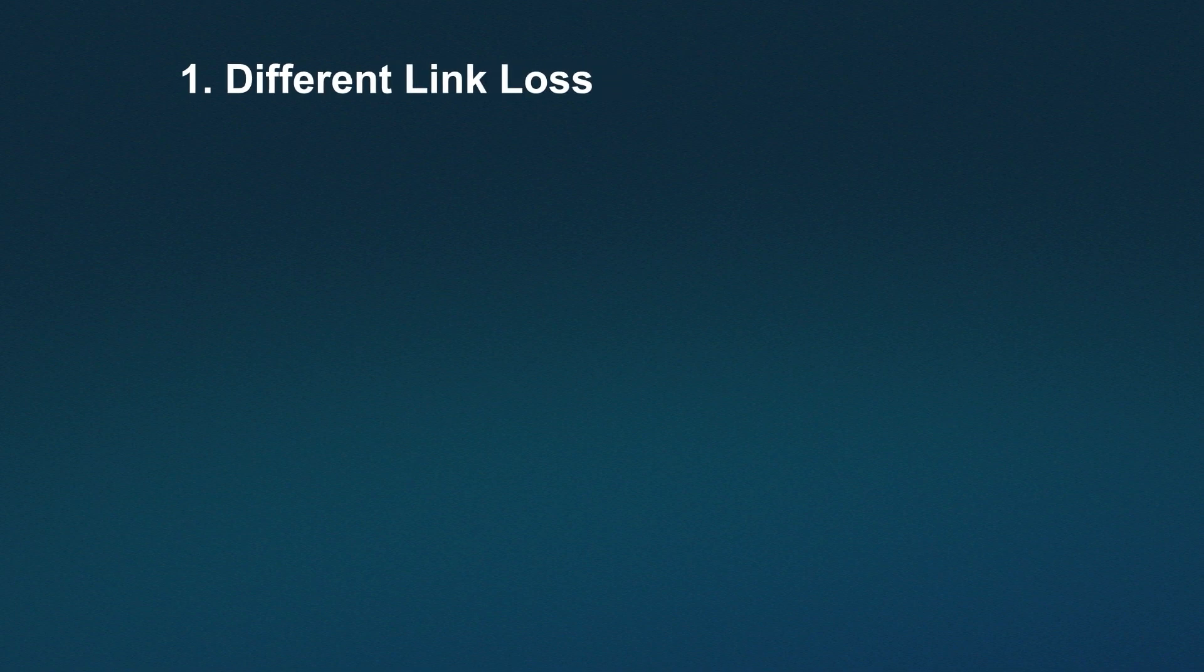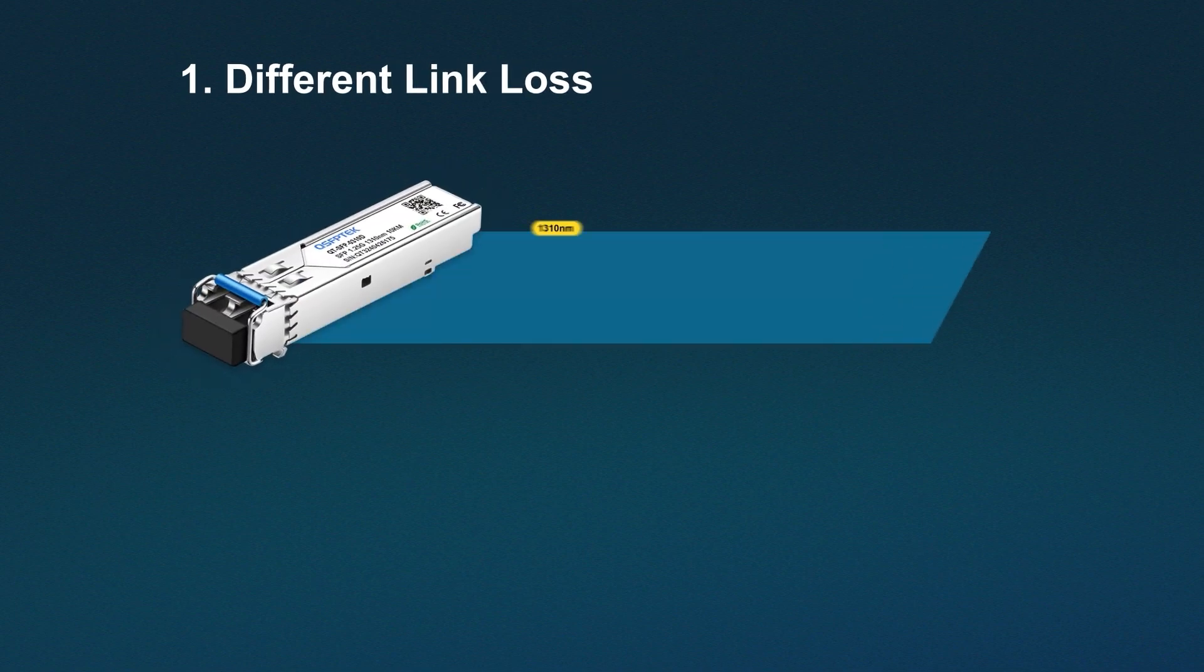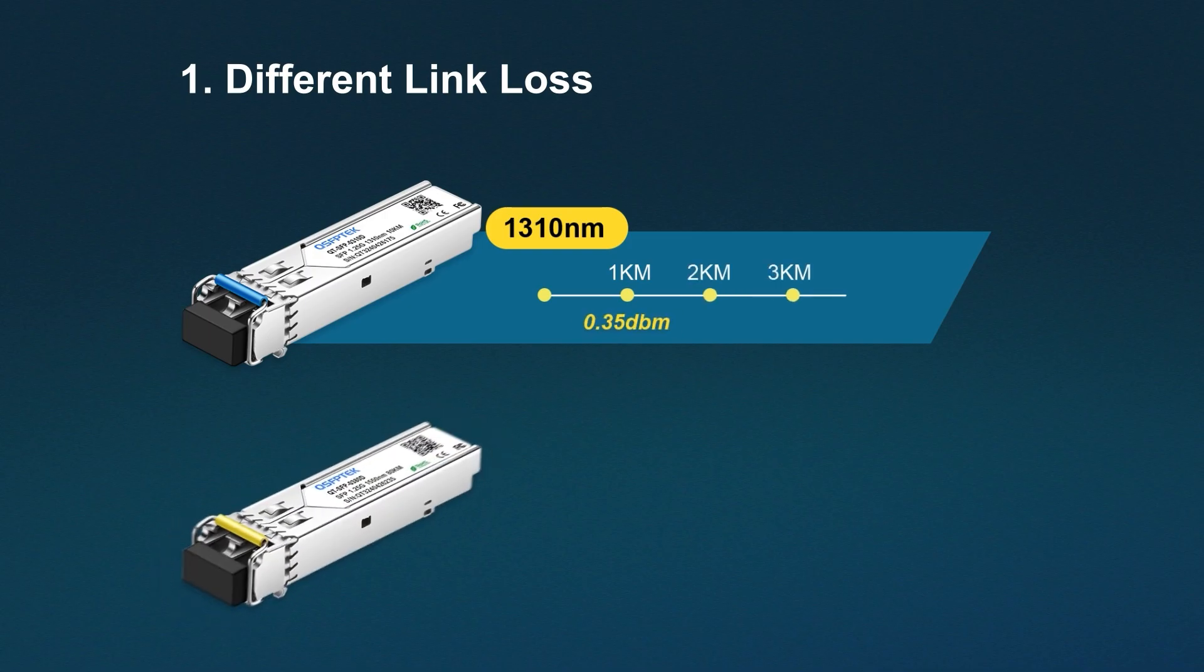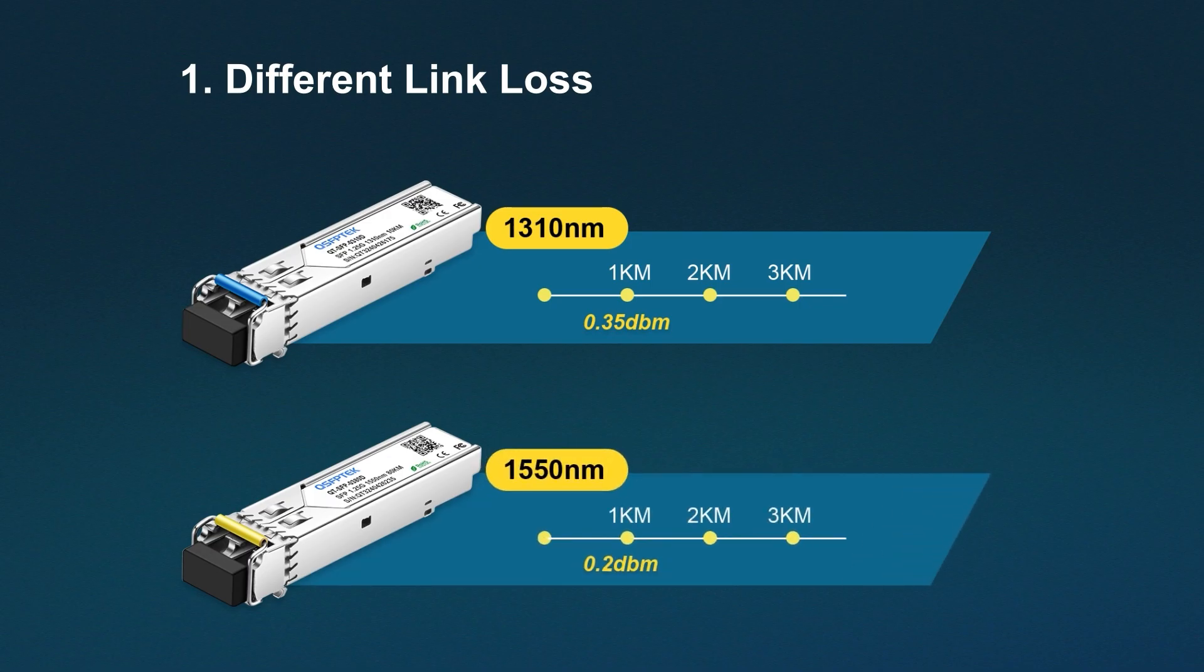First, the link loss is different. For 1310 nanometer modules, the link loss is generally calculated at 0.35 dBm per kilometer, while for 1550 nanometer modules, it's about 0.20 dBm per kilometer.